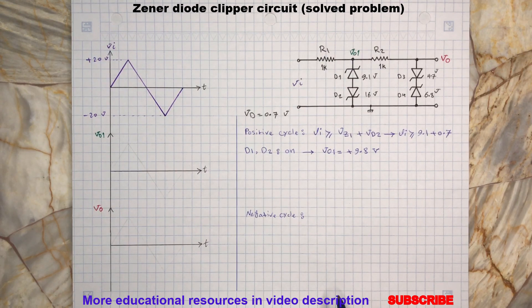Again, since D3 and D4 diodes are in series, then the voltage at the output terminal vo won't go above 0.7 plus 6.8 volt during the positive cycle.